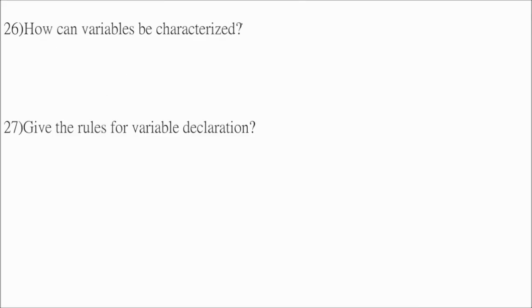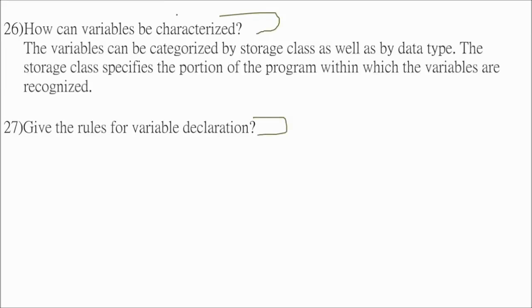Then you may be asked, how can variable be characterized? And give the rules of variable declaration. So how can variable be characterized? A variable can be characterized by storage class as well as by data type. So the storage class specifies the portion of the program within which the variables are recognized.